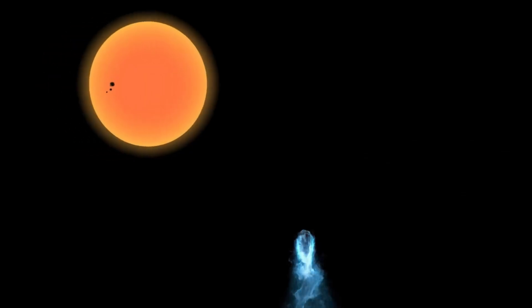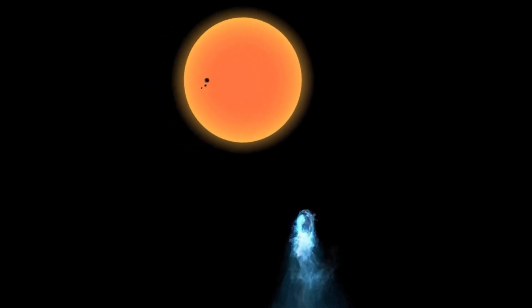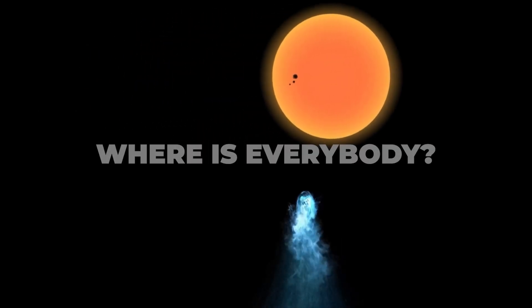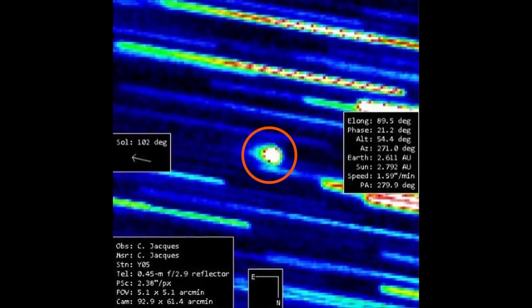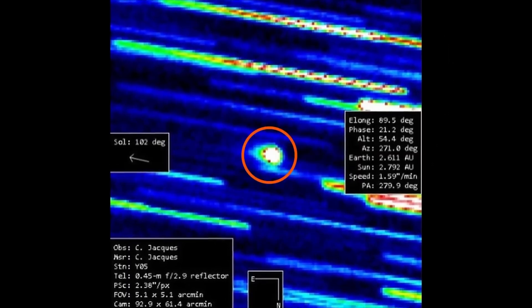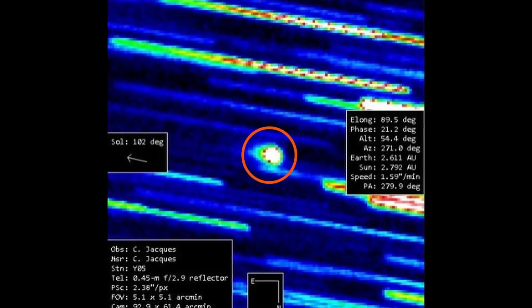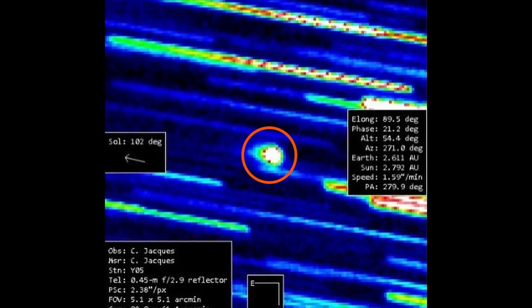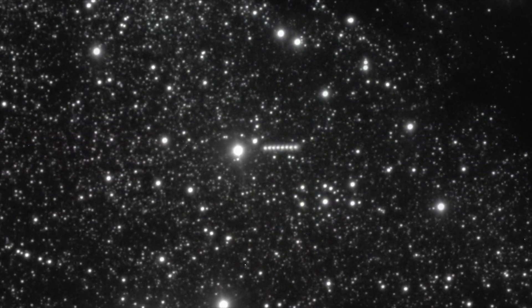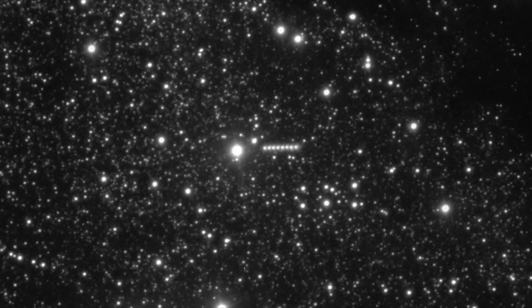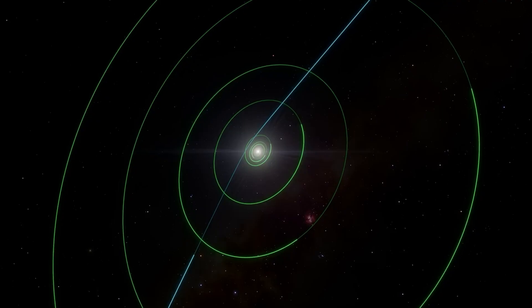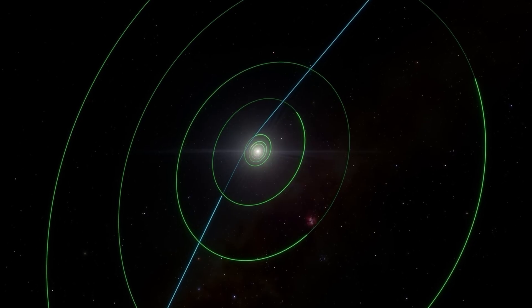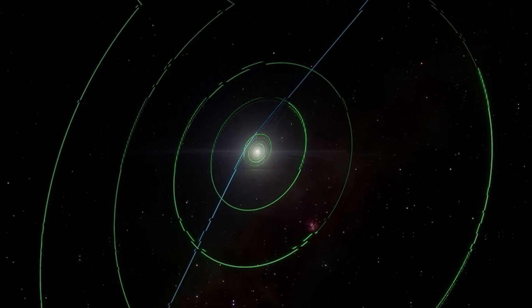This brings us back to the silence. We always ask, where is everybody? Maybe the Dark Forest theory is the answer. In a dangerous universe, you don't scream 'here I am' with radio signals. You move like a shadow. You send objects like 2I/Borisov, shrouded in 10-micron masks, hidden behind impossible anti-tails, following trajectories that look just natural enough to keep the locals from panicking.